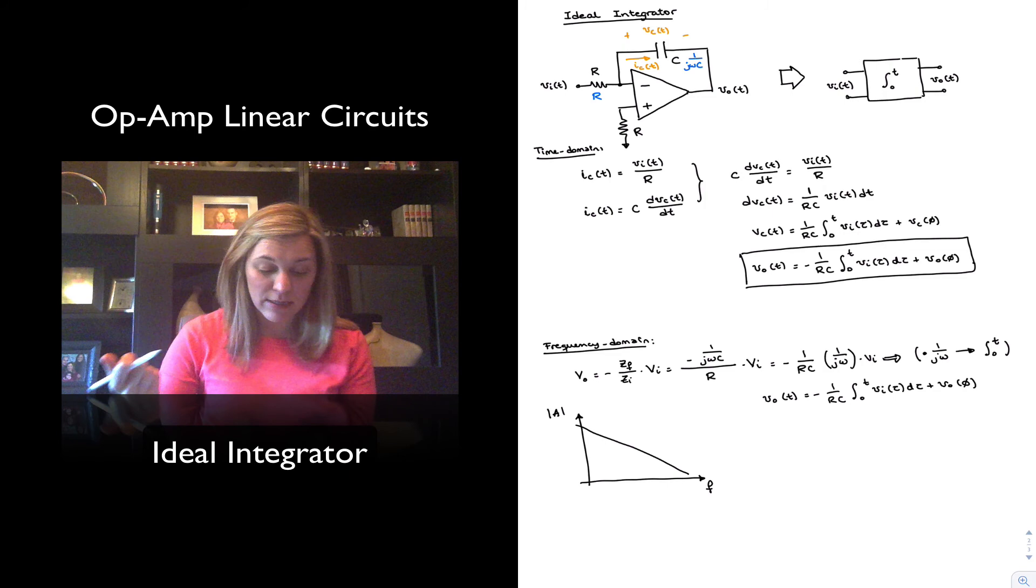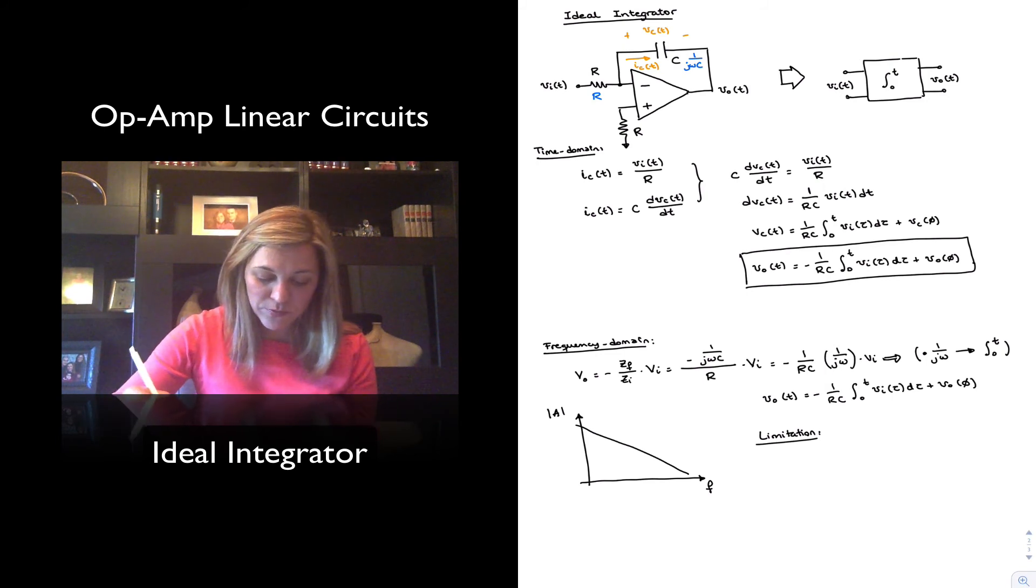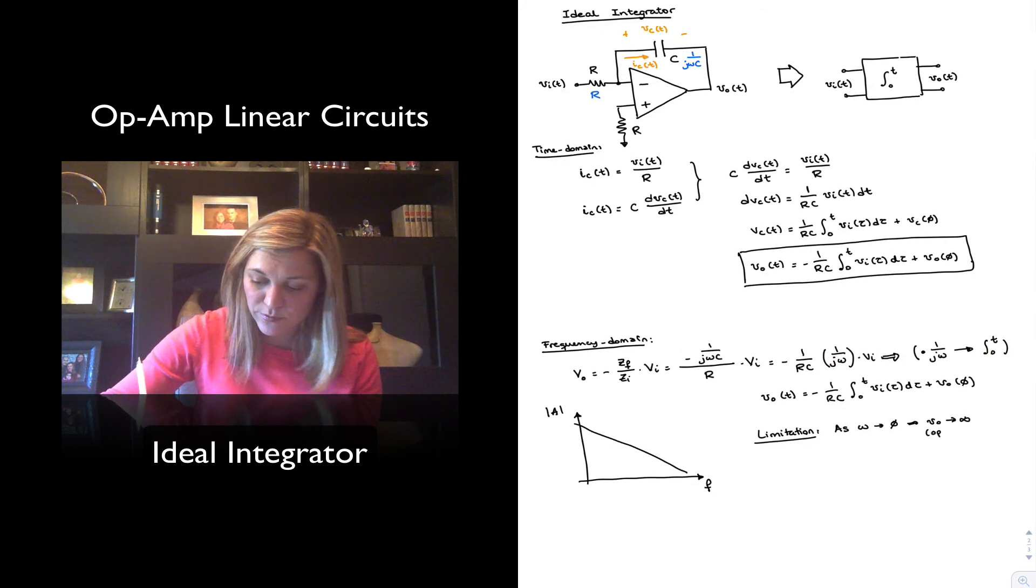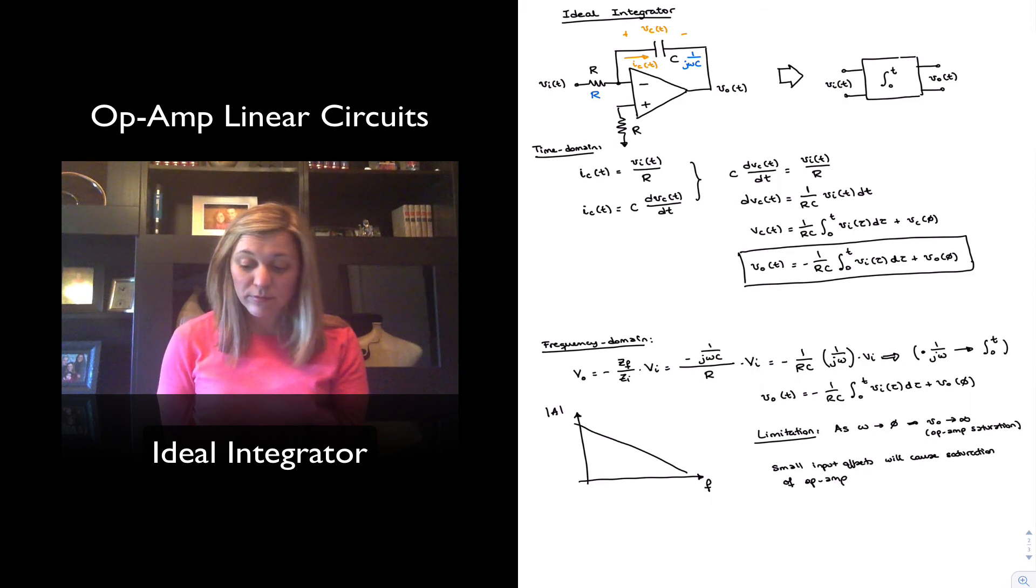For now, I'm going to write down as the main limitation of this particular configuration is that as the frequency approaches zero, Vout, the ideal Vout approaches infinity, which causes op-amp saturation. And therefore, small input offsets will cause saturation of op-amp and therefore the circuit will not be operating as intended.